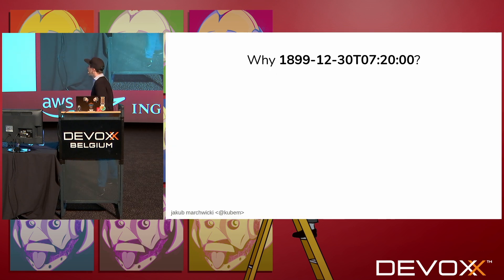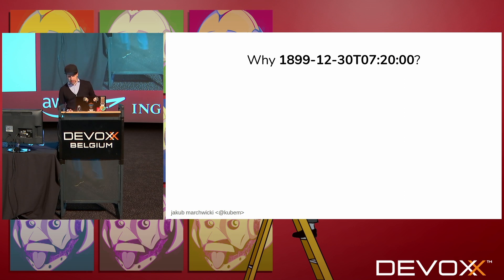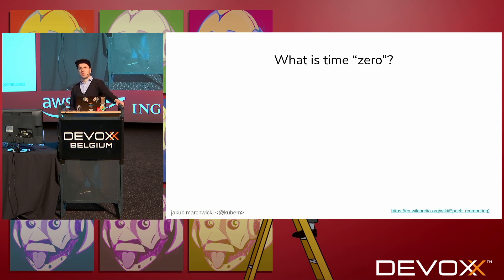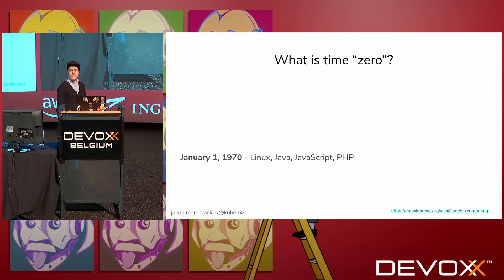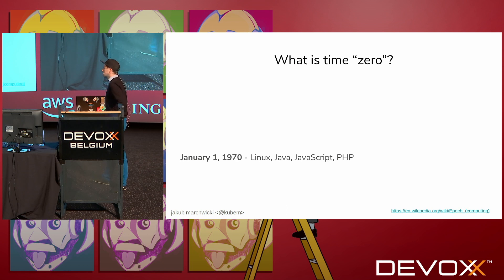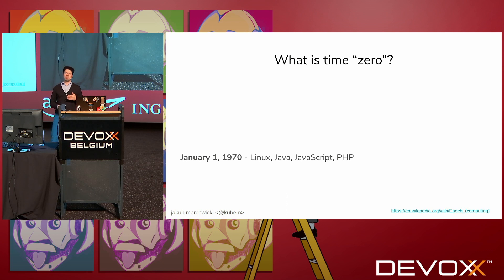Why is it 19th century, you might ask? That pretty much goes to the question: what is time zero in our computer system? That's a fairly easy question — we are all Java developers, we know the answer. It's time zero for epoch: 1st of January 1970. But it's not entirely true, because different systems, different operating systems, different programming models and languages tend to have a different time zero.